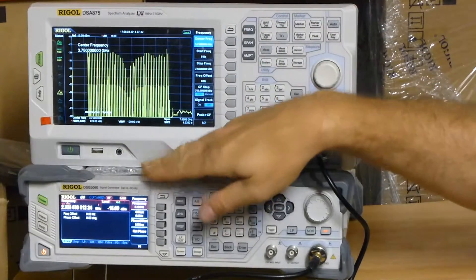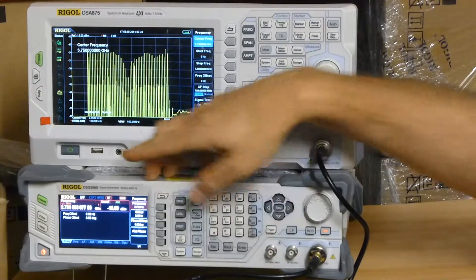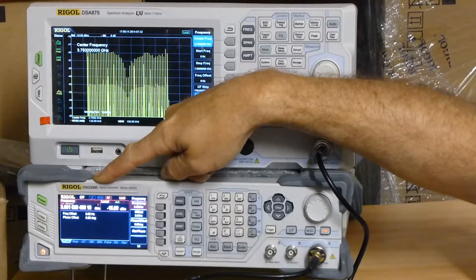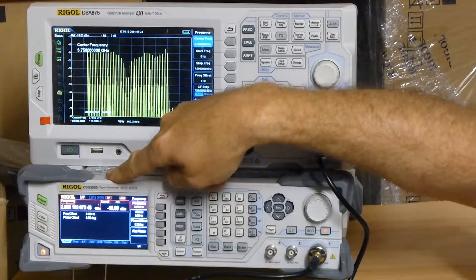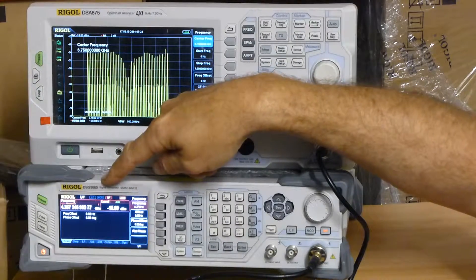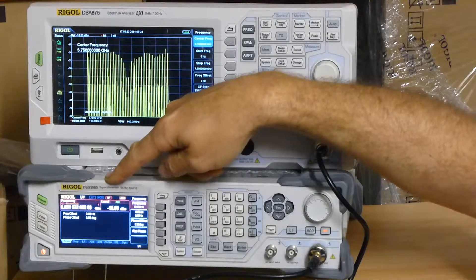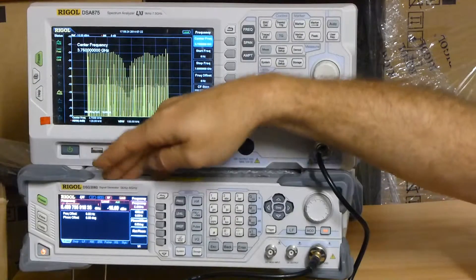So down here to act as a generator, I'm using the new Rigol DSG3000 series. This is a DSG3060, 6 gigahertz signal source, RF signal source that will do IQ modulation up to 200 megahertz bandwidth. Very powerful instrument.